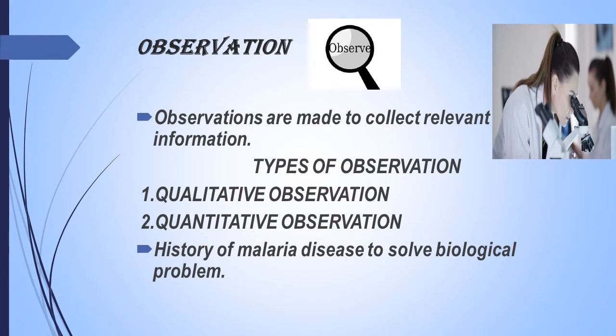The first step of biological method is observation. What is observation? Observation means we are going to observe two ways. First is qualitative observation. Second is quantitative observation.